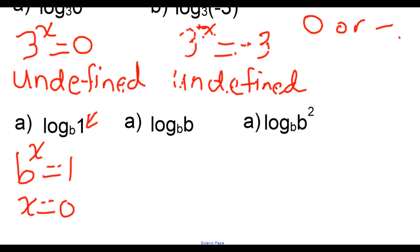In the next example, I've got B to what power is B. This is pretty much common sense. If this B has to match this B and this exponent is a 1, then the missing exponent must be a 1. So the rule is if the base of the log is the same as the argument, then the answer is just 1.